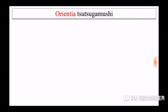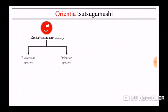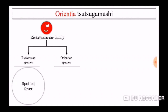Next we will discuss about the organism Orientia tsutsugamushi. As mentioned earlier, it is a gram-negative bacterium which belongs to the family Rickettsiaceae. This Rickettsiaceae family consists of two major species: Rickettsia species and Orientia species. Rickettsia species mainly causes spotted fever, and Orientia species causes typhus fever. The scrub typhus-causing Orientia tsutsugamushi belongs to the Orientia species.